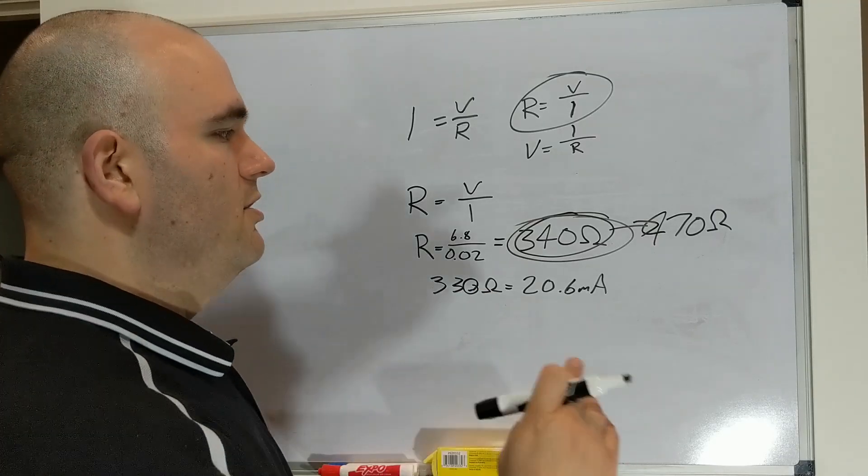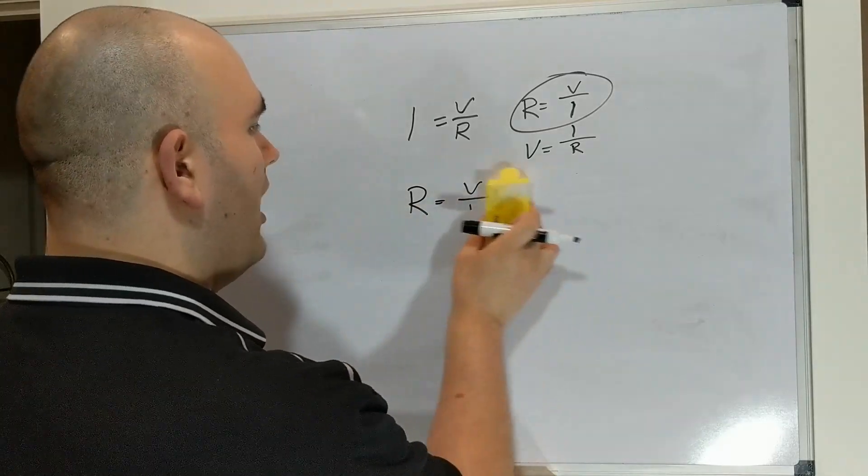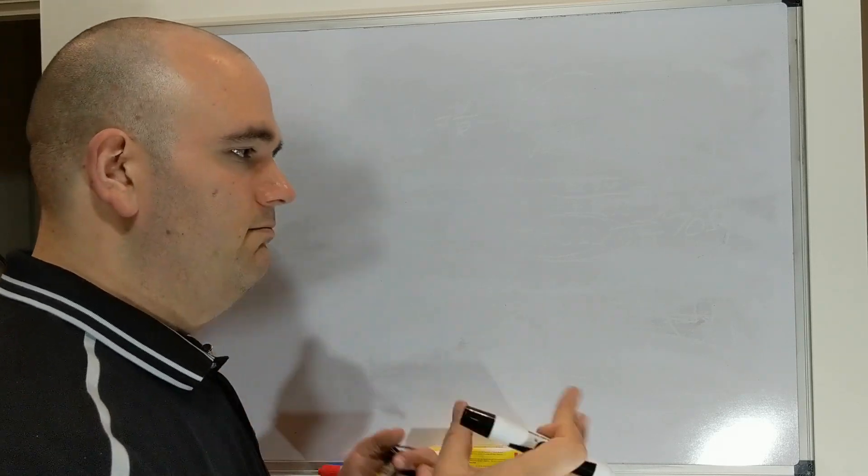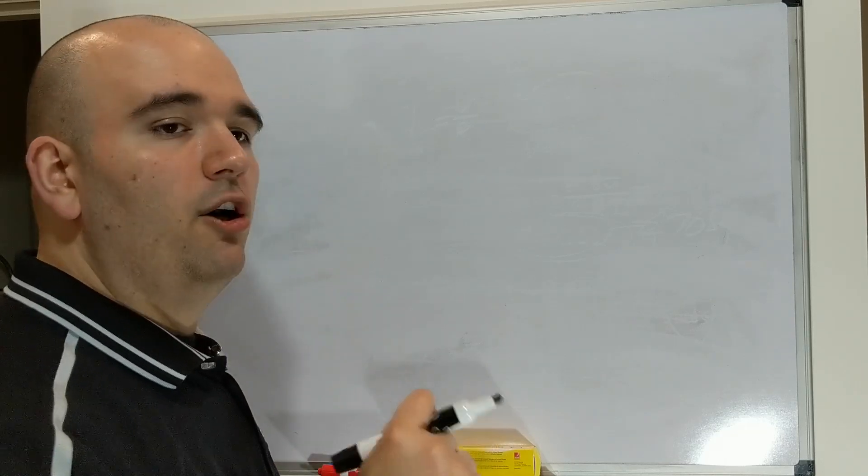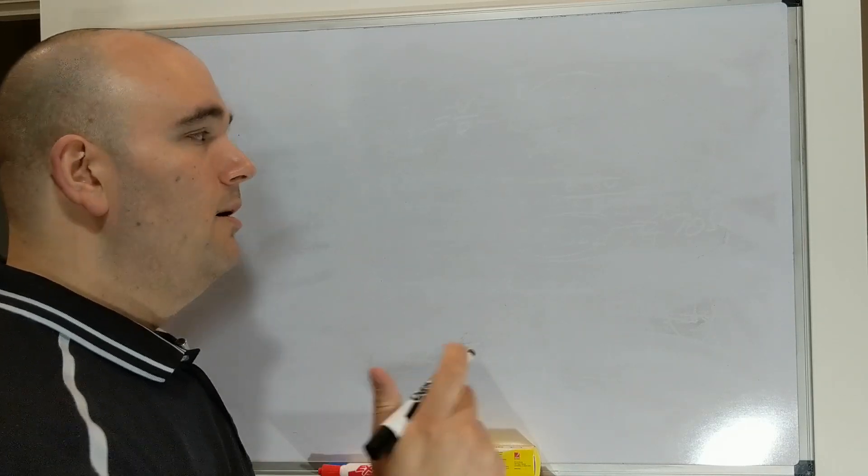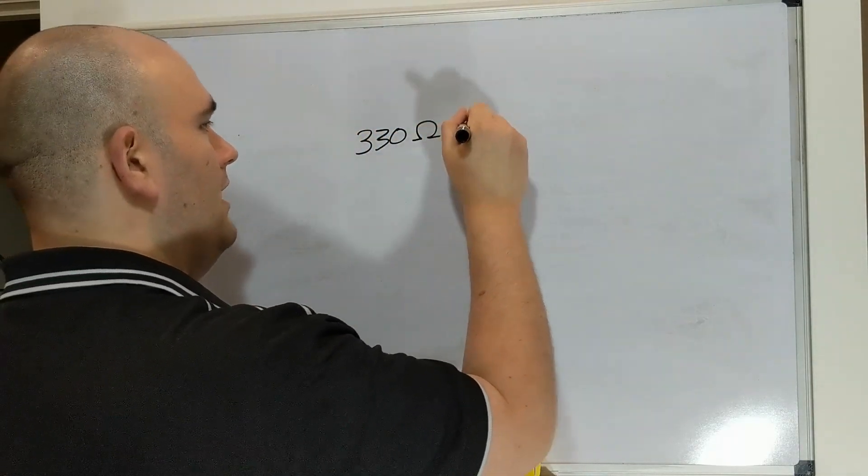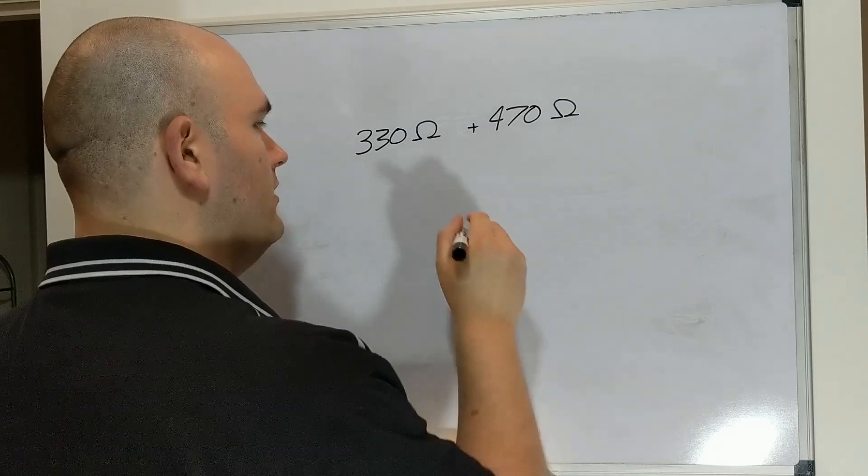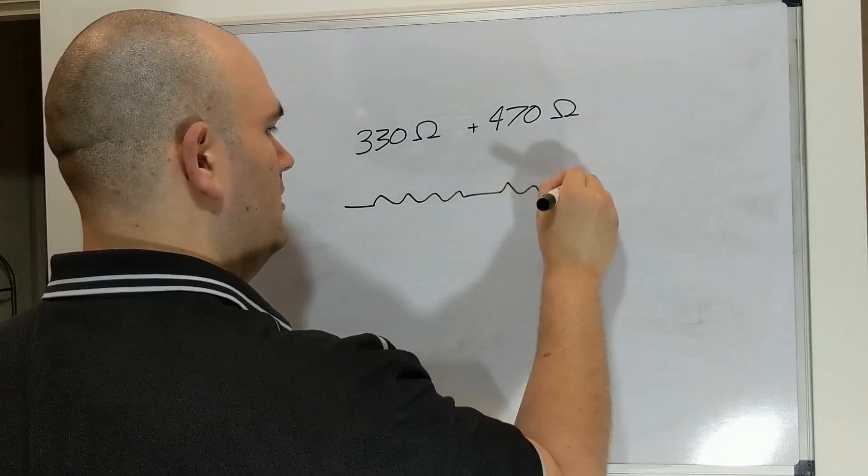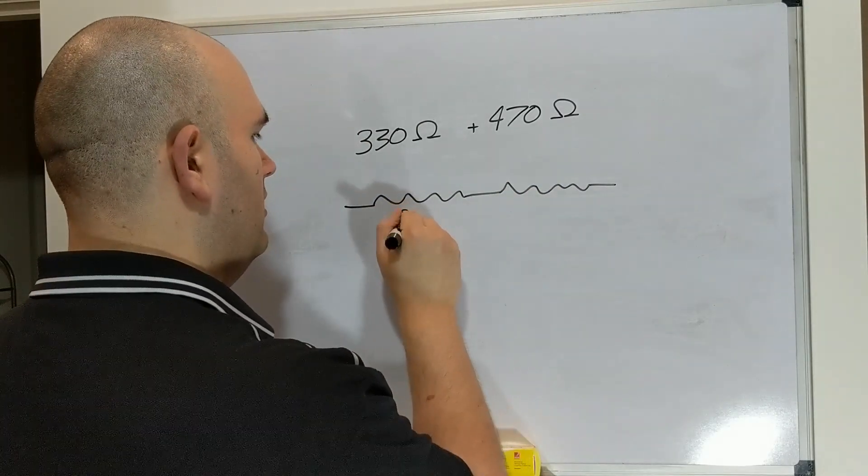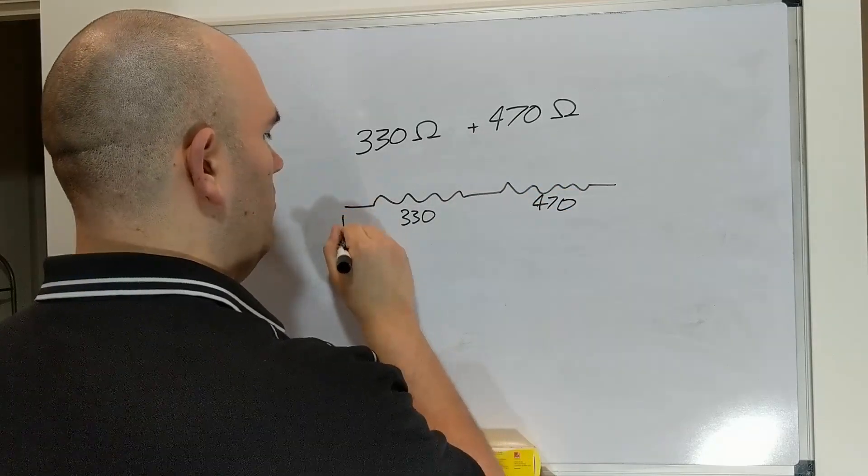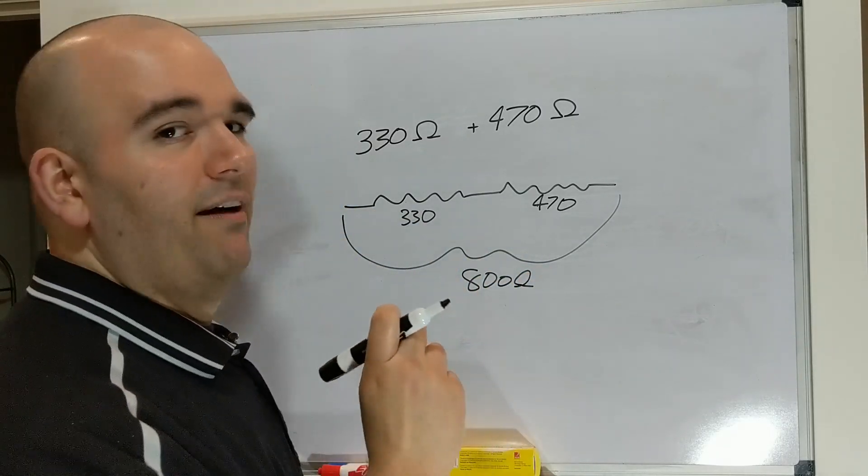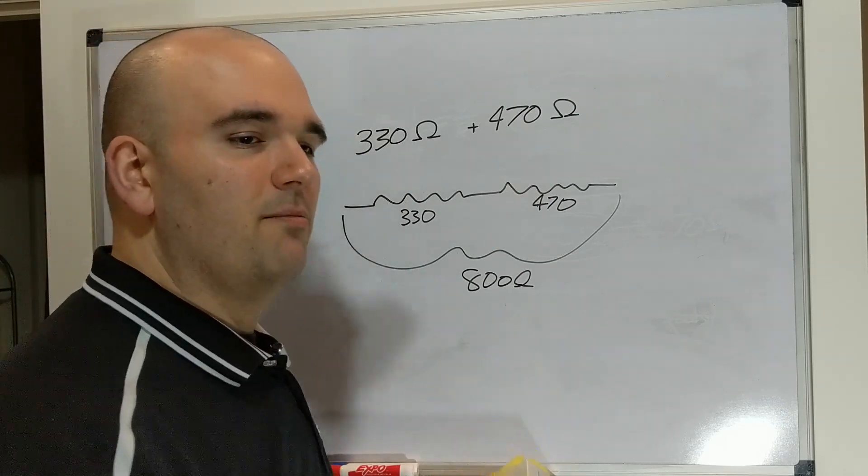Now I won't get too into series resistors versus parallel resistors because there's an entire other video on that. But let's say you needed an 800 ohm resistor. And you say, well, I don't have one of those, but I've got a 330 ohm resistor and a 470 ohm resistor. Well, if you really need it to be just 800, then you can actually put those in series, not in parallel. They need to go one after the other. And this system will give you total 800 ohms of resistance. It's very uncommon that you would really have to do this until you get into higher level electronics, but it's just something that you should know.